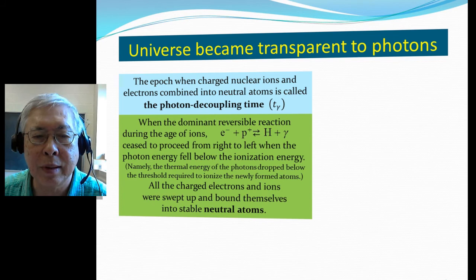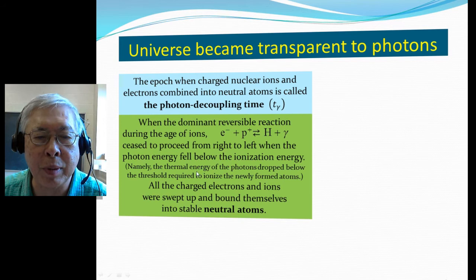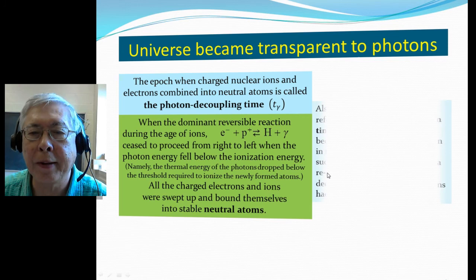If the photon doesn't have enough energy to go from right to left, that will be the photon decoupling time because all the charge goes into neutral atoms. The thermal energy of the photon drops below the threshold required to ionize the newly formed atoms, so all the charged electrons and ions were swept up and bound themselves into neutral atoms.